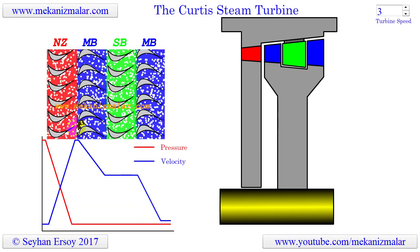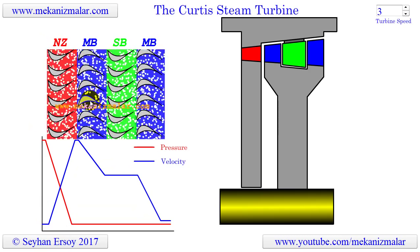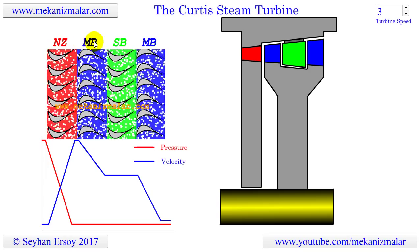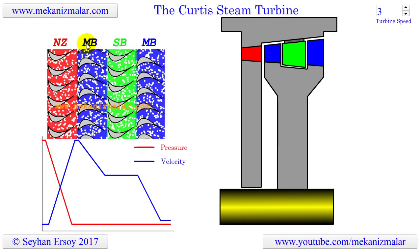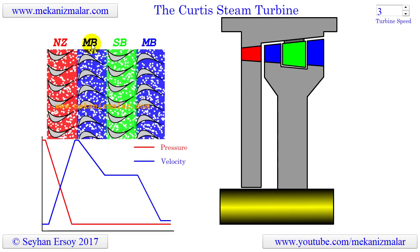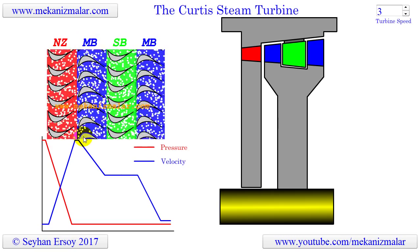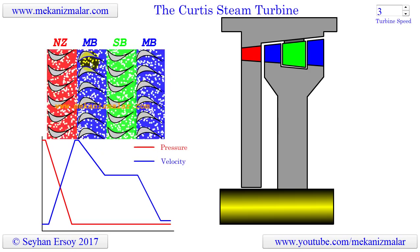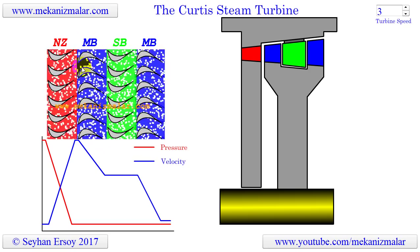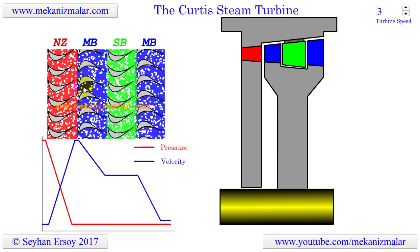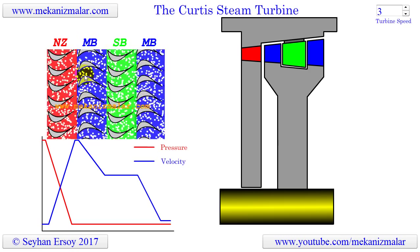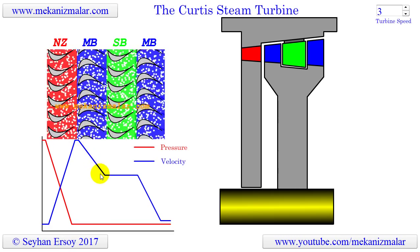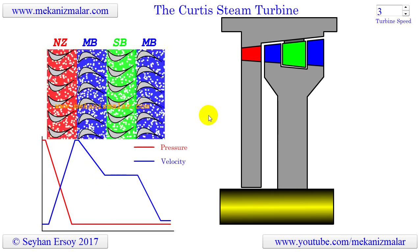The next stage, shown in blue and indicated by MB, corresponds to the first action stage with moving blades. The steam coming at high speed from the nozzles hits the moving blades and pushes them forward. During this process, the direction of the steam is changed and the kinetic energy of the steam is converted to mechanical energy. As a result, the velocity of the steam is reduced in this stage, as can be seen in the plot. The blades in this stage are attached to the rotor of the turbine.